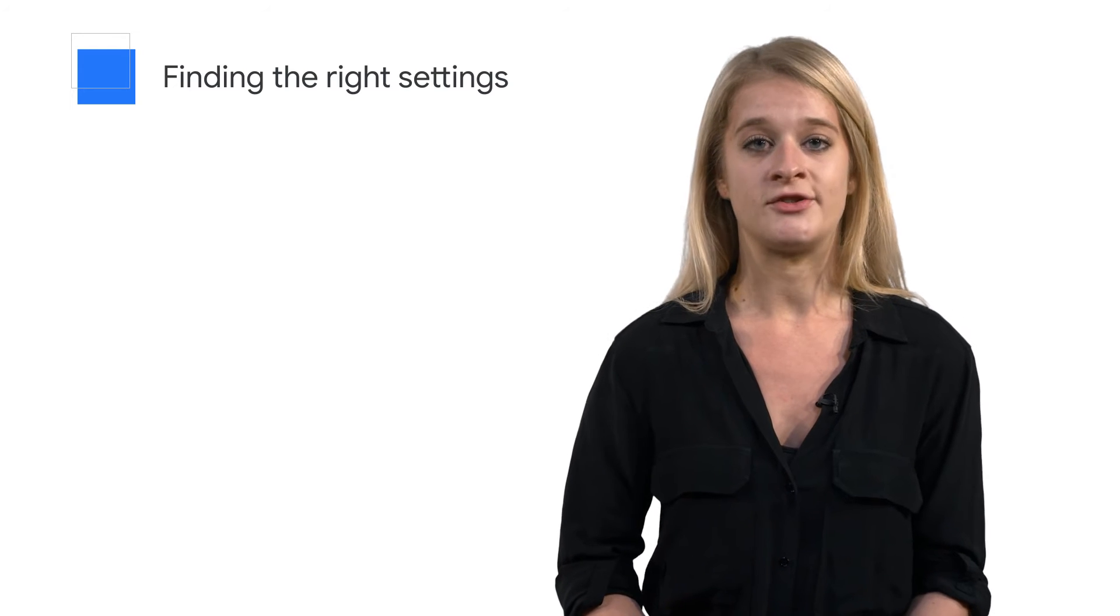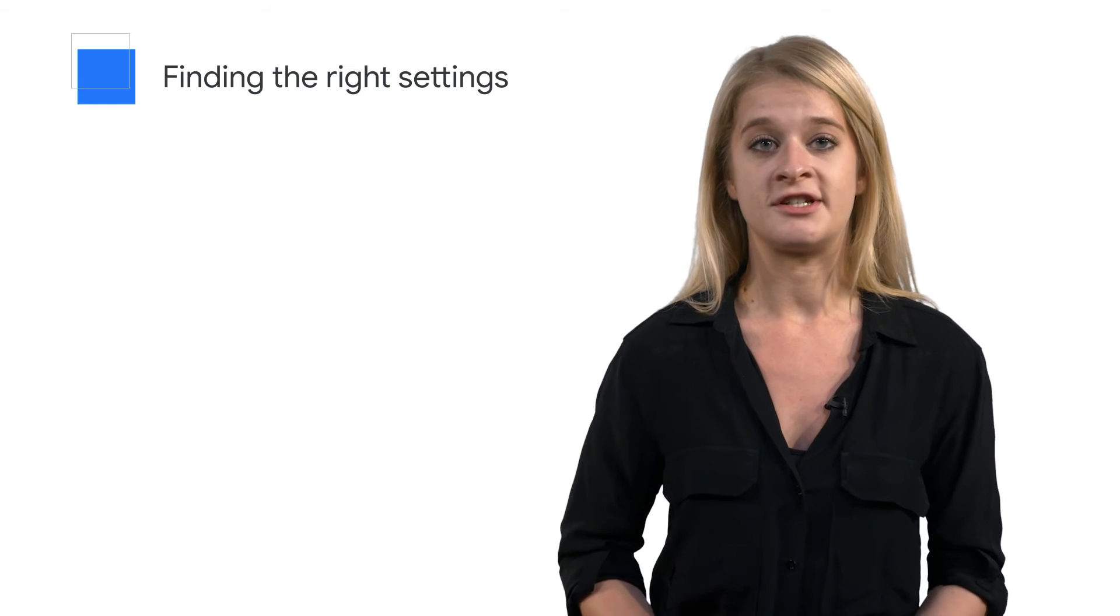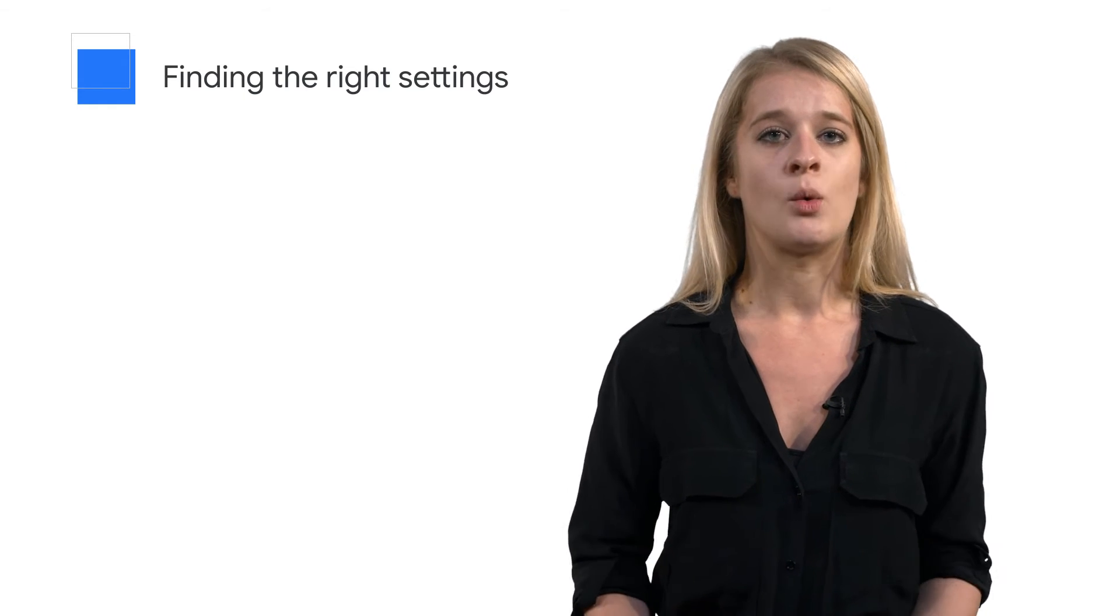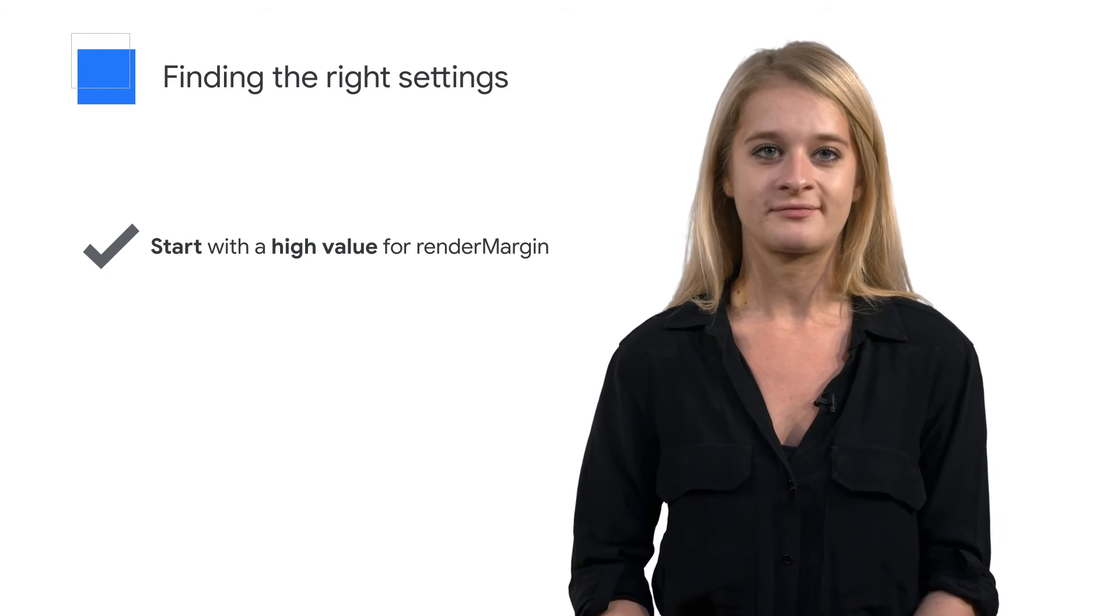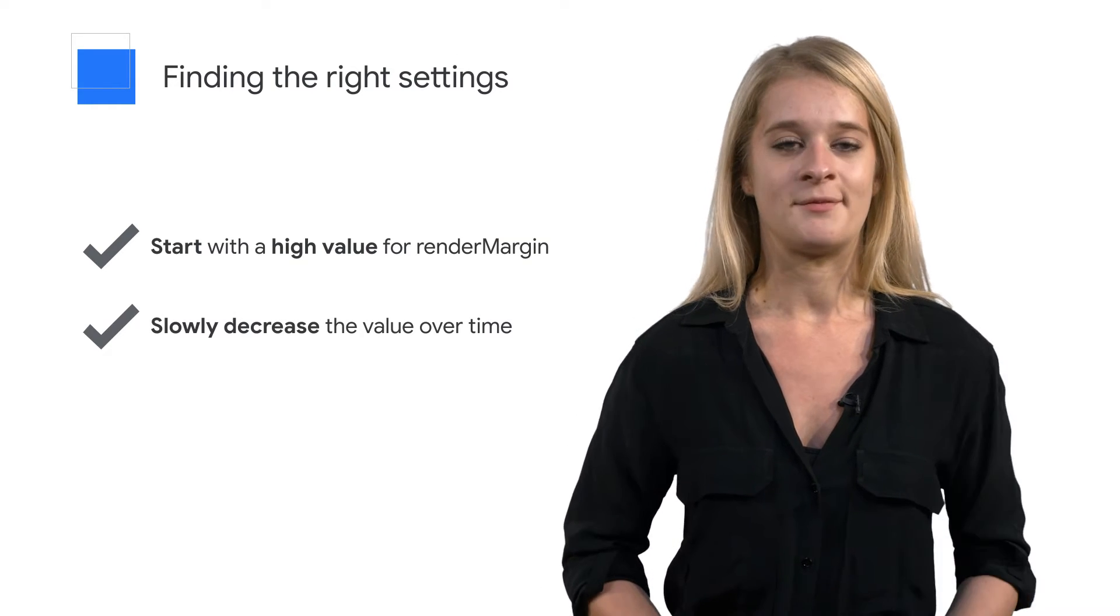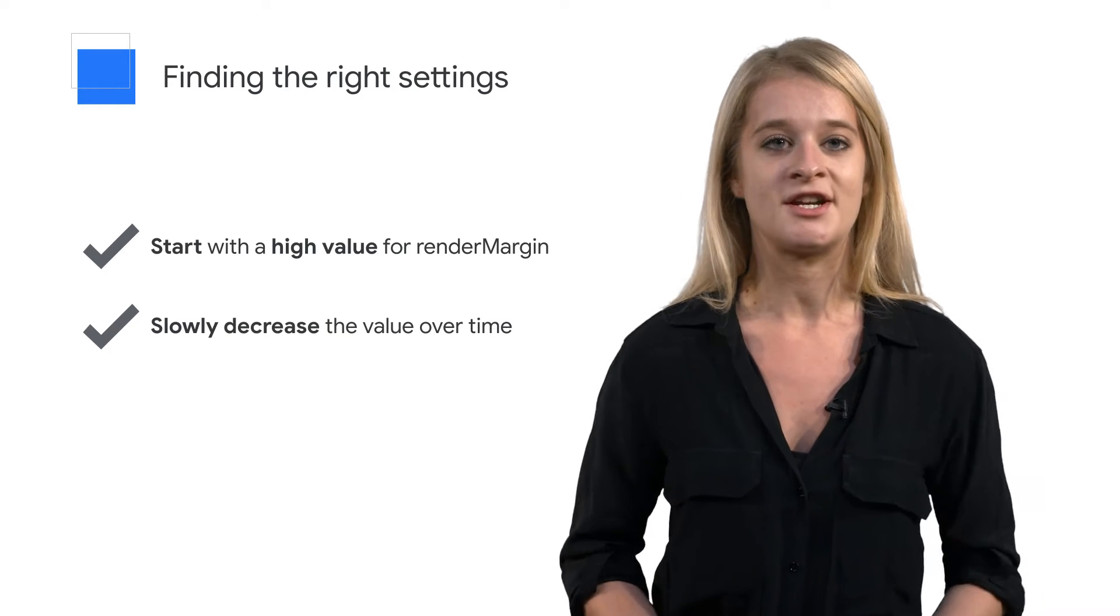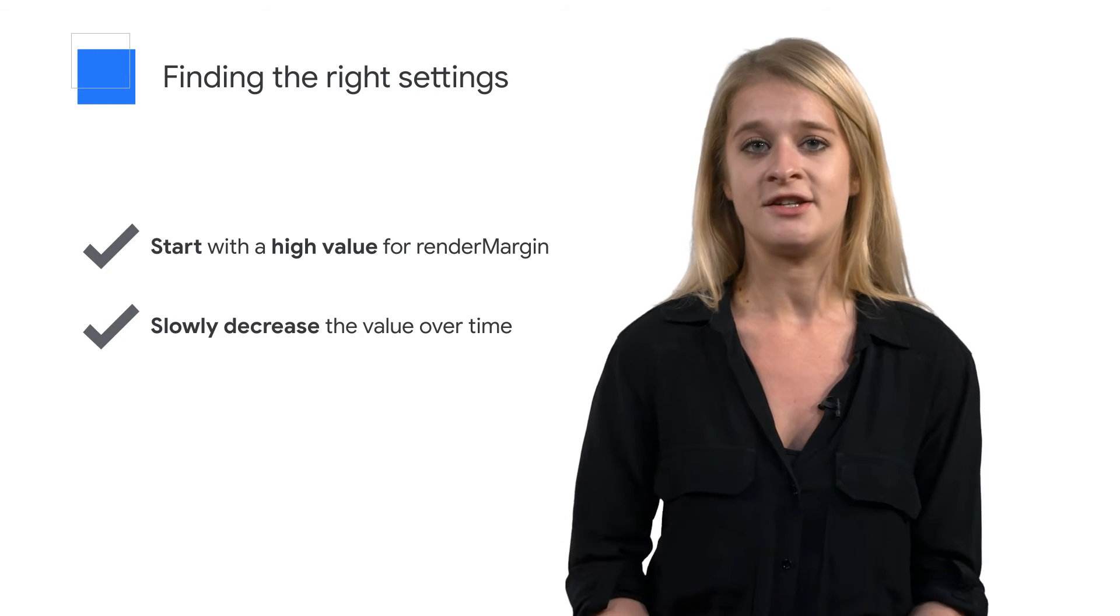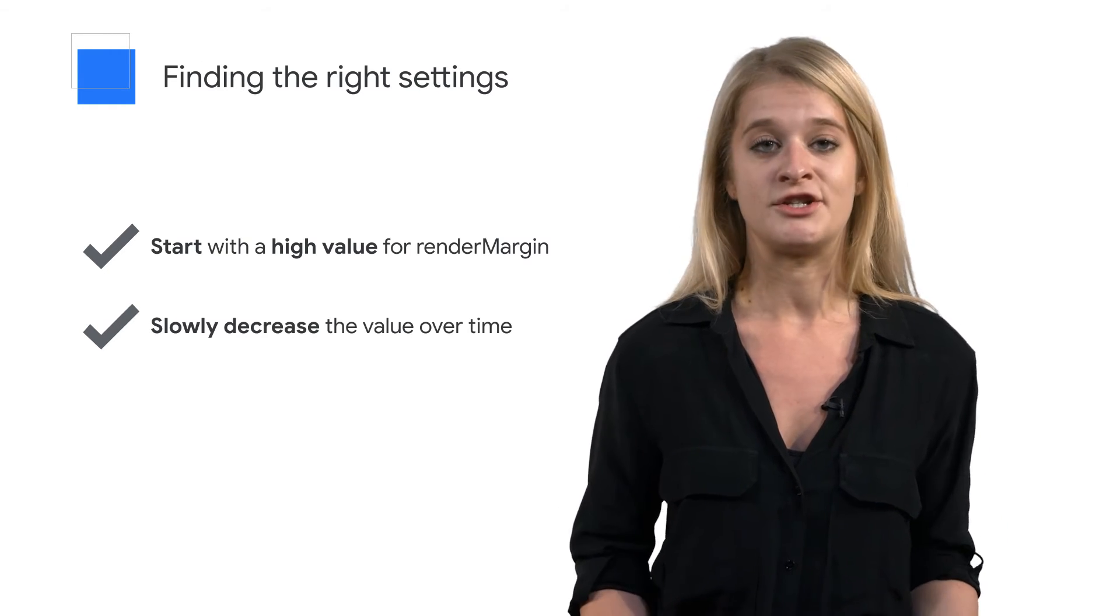Some last tips on how to optimize your settings. The optimal settings will vary depending on your type of site, users and markets you're active in. From our experience, one approach that has worked well is to start with a high value for render margin, such as 200. With that as a starting point, you can slowly decrease the value over time. At the same time, monitor your core business metrics, such as viewable impressions. Stop when you reach a point where you no longer see any significant increases in viewability. When that happens, you've likely reached a point of diminishing returns.